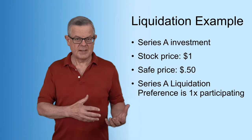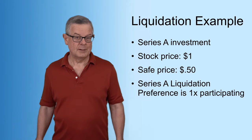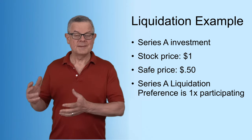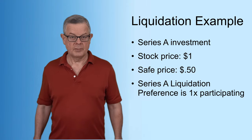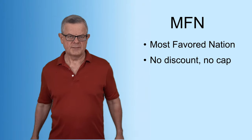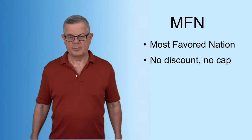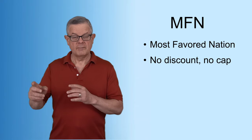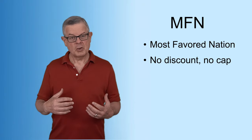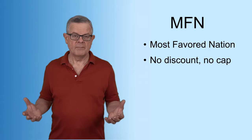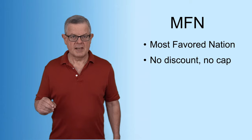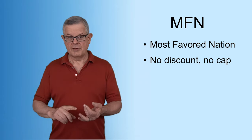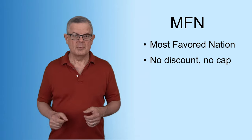So that gets corrected in the SAFE preferred shares — that's the most important difference. Pretty much all the other terms are the same as with the standard Series A preferred stock. Now, we mentioned the most favored nation or MFN clause, which one of the four versions of the SAFE includes. It works much like it does with a convertible note: if in the future you give a future SAFE investor better terms than a current investor, that current investor has the option of adopting those more favorable terms. So the version that has the MFN has no discount and no cap, but if in the future you give somebody a SAFE with a discount and/or a cap, that earlier SAFE investor has the right to adopt those terms.